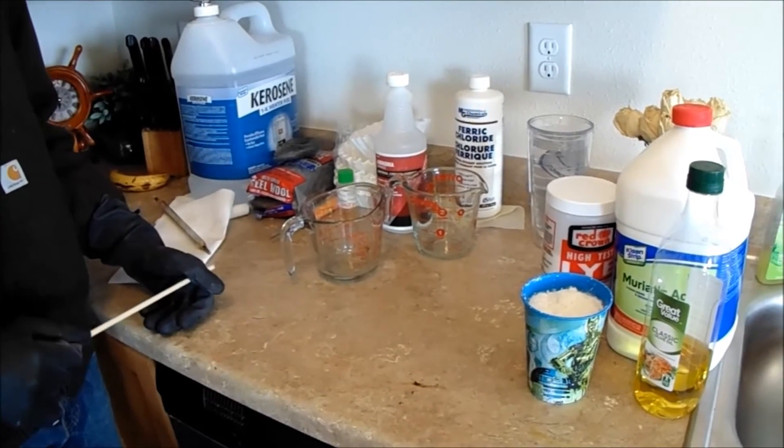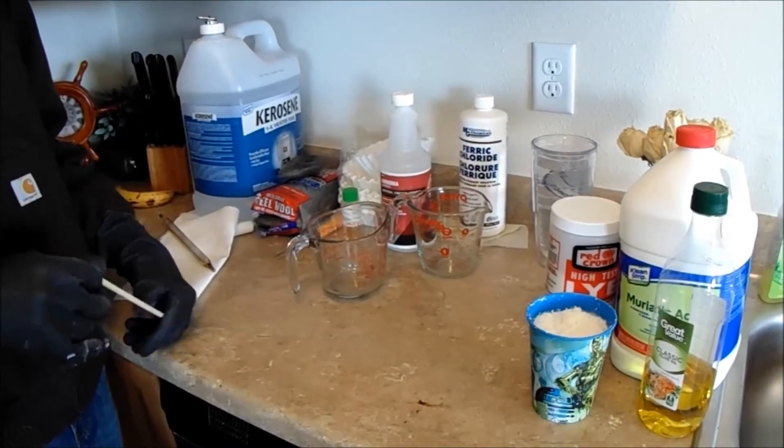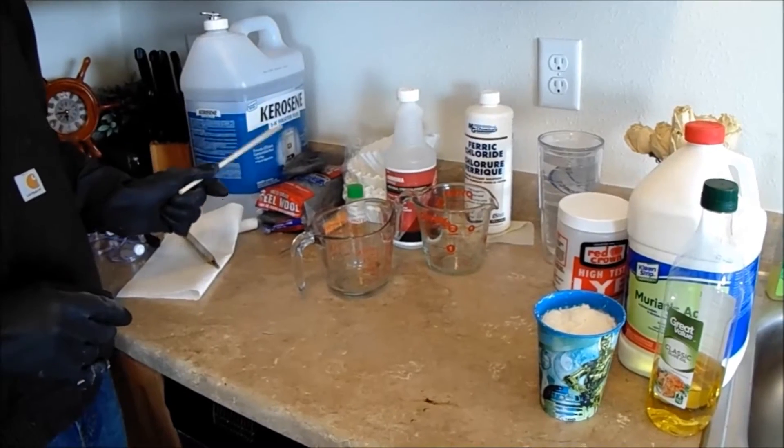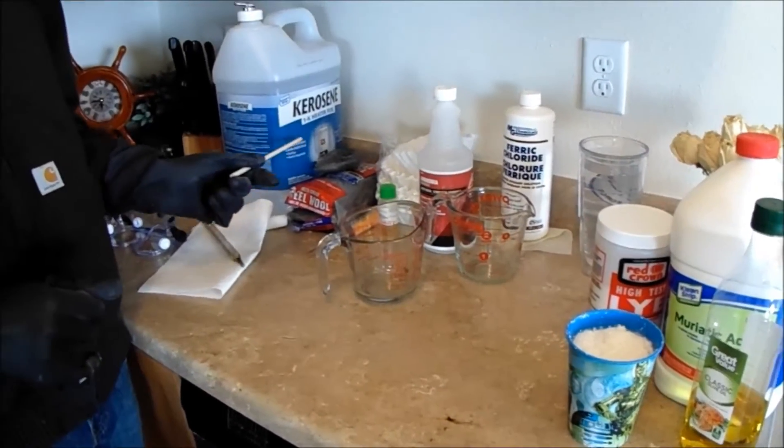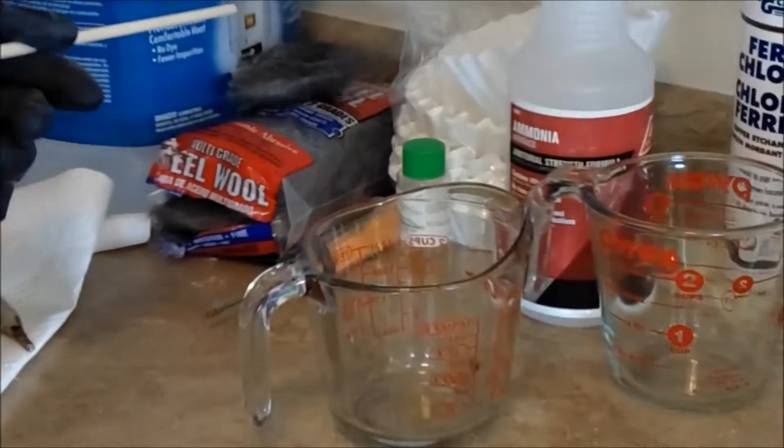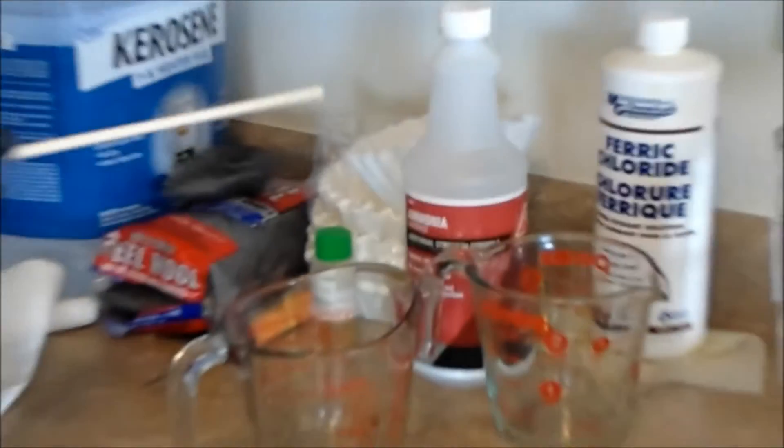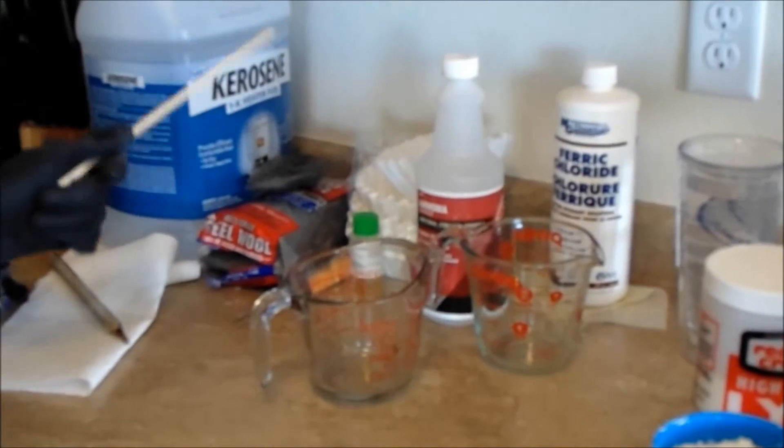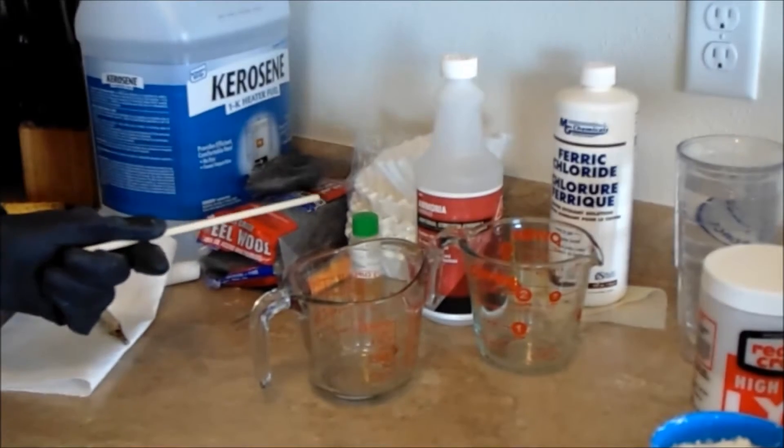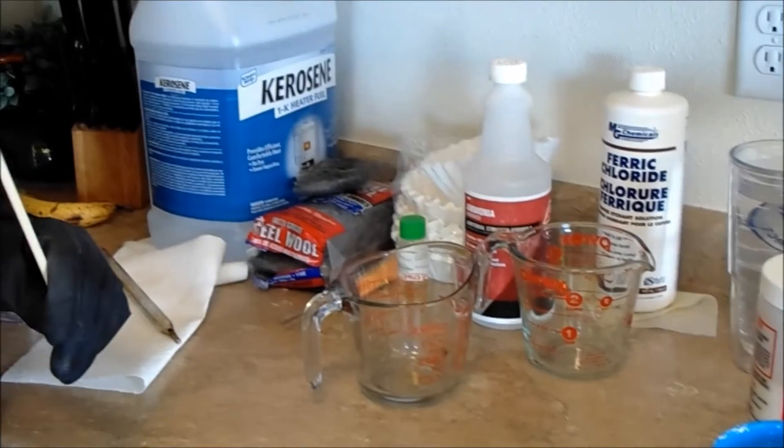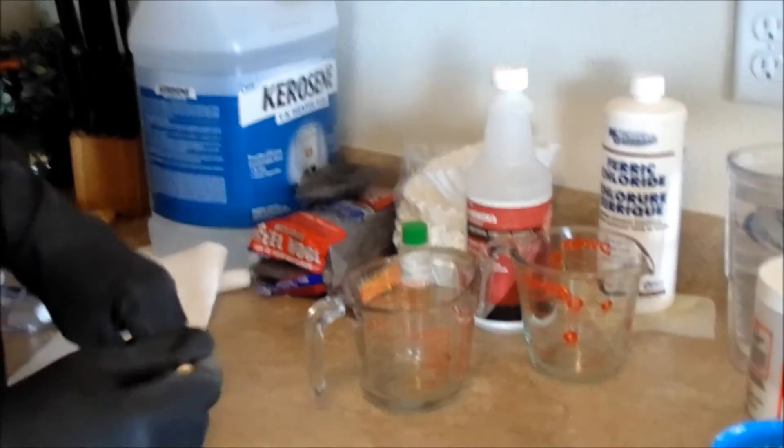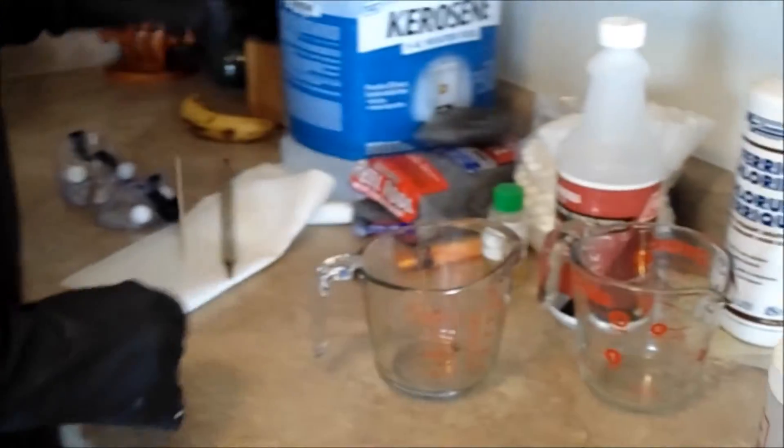Now that was just one part. What you need for the ferrofluid is ferric chloride which is a PCB etchant you can buy from Radio Shack, some steel wool that you can get from anywhere really, and then ammonium to mix with those two things to create the magnetite. I used coffee filters to help filter some of the nasty stuff out of the ferric chloride. And lastly the carrier fluid that we used was kerosene in the big plastic bottle with the blue label, and that is what the oleic acid coated magnetite was carried in.